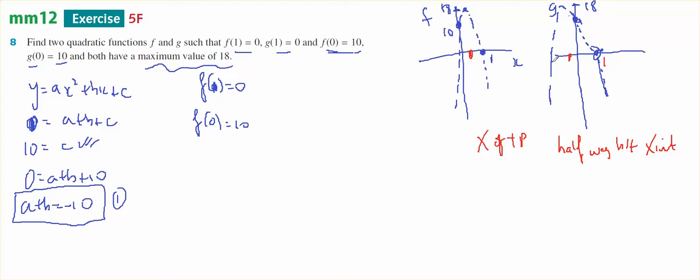I can put it in turning point form, but I only know the 10. I don't know the others. Or I can use x equals minus b over 2a. So I can use this. I know f of minus b over 2a equals 18.